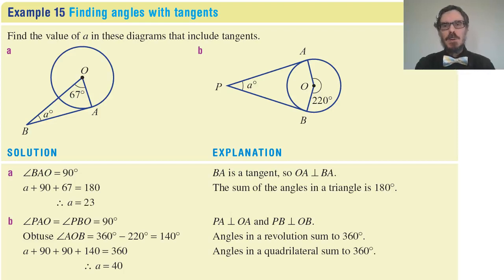Let's try some examples. Here I have a tangent and I want to know this angle here. Well, wait a minute. This tangent touches at the circle at right angles to the radius. So this is 90 degrees. And that means this angle is 180 minus 90 minus 67, which is 23 degrees.